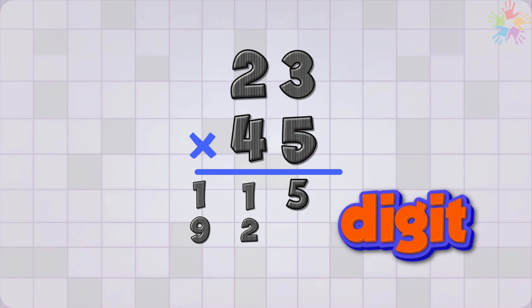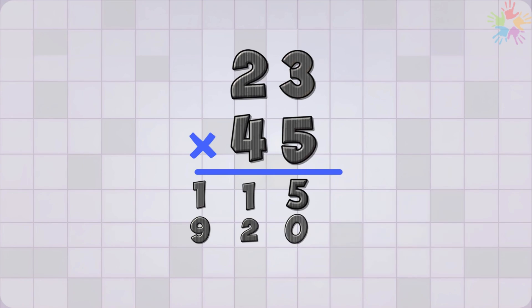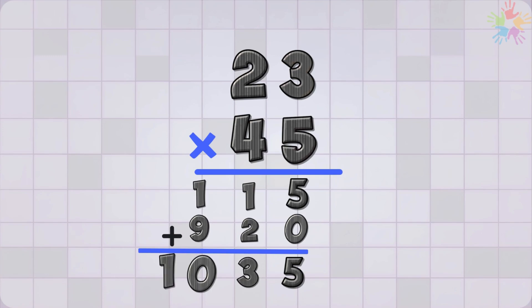There is no digit beneath the 5 in the first row. When that happens, we use 0 to fill the empty space just to help us keep track of things. So now we can add them. 5 plus 0 gives us 5. 1 plus 2 gives us 3. And finally, 1 plus 9 gives us 10. So in total, we have 1035.